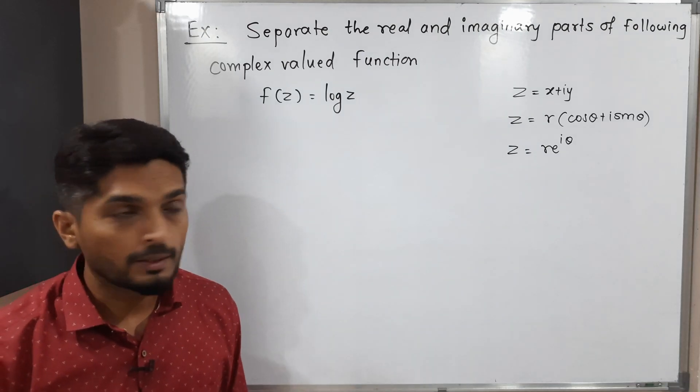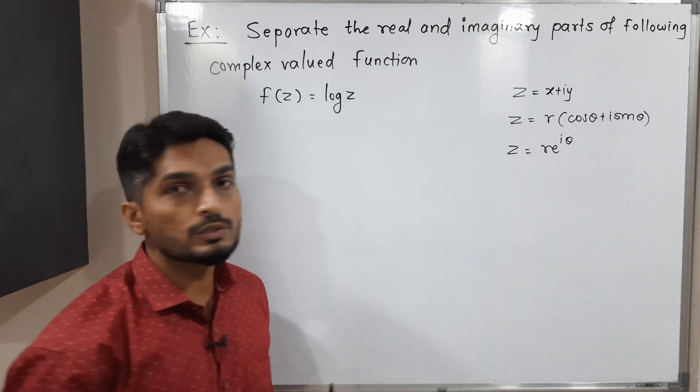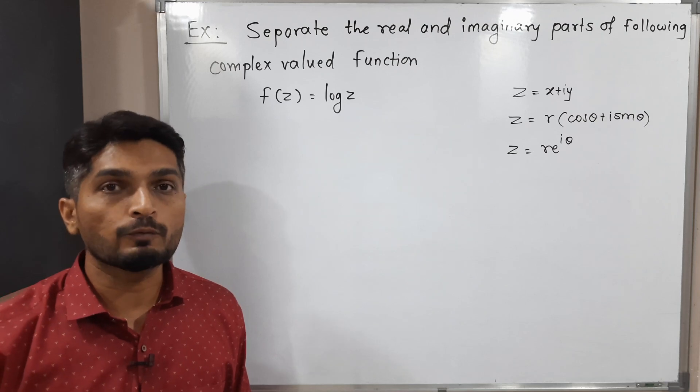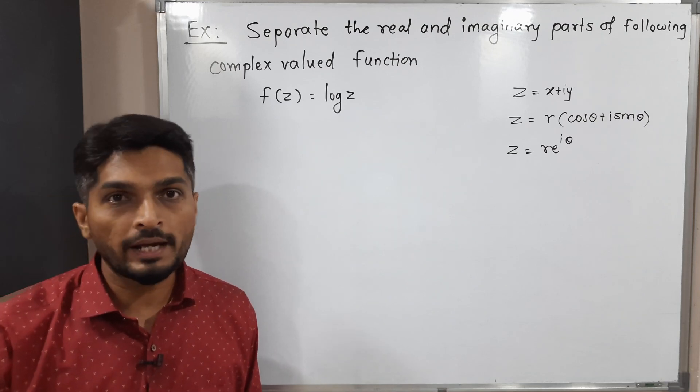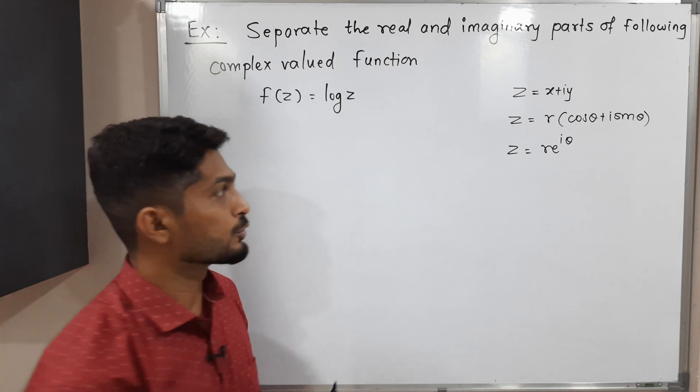In the next two forms we use r and θ, and in the first form we use x and y. So obviously there is a relation between x, y and r, θ. Let us recall that relation also.